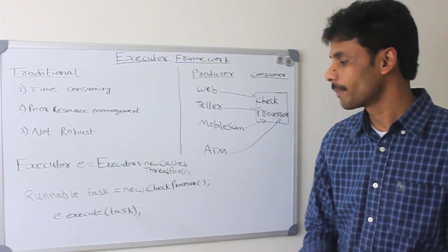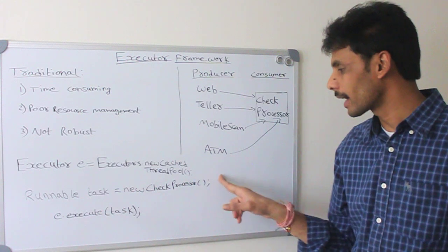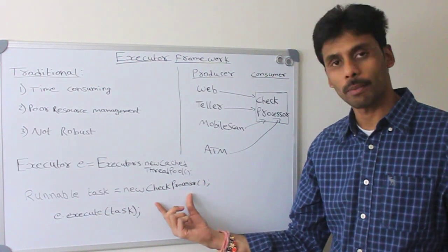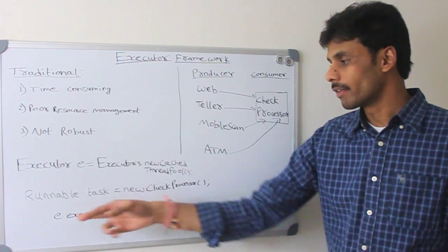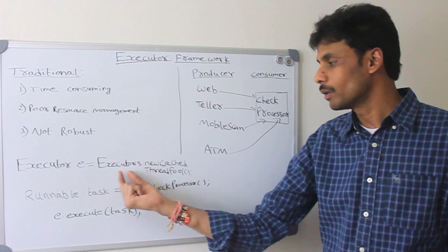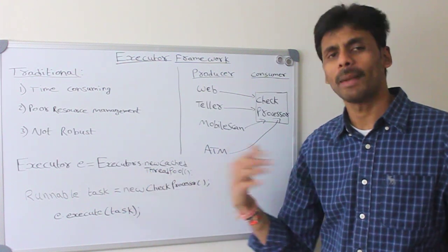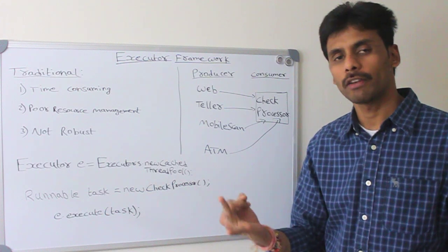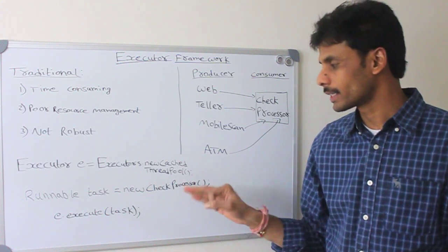All we need to do is simply implement a class that we want to be run as a thread. In my case, the check processor class. It will implement the runnable interface and then you create a pool of threads by using executors. There are multiple ways to create pool of threads: fixed thread pool, cached thread pool, scheduled thread pool, etc.